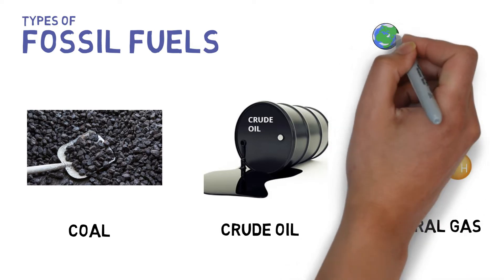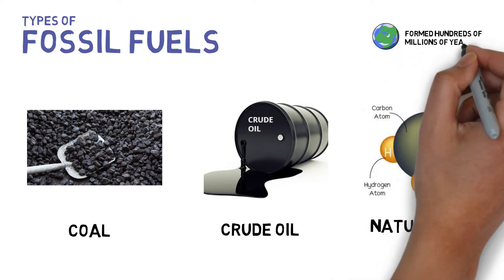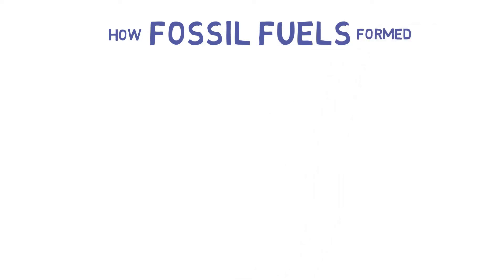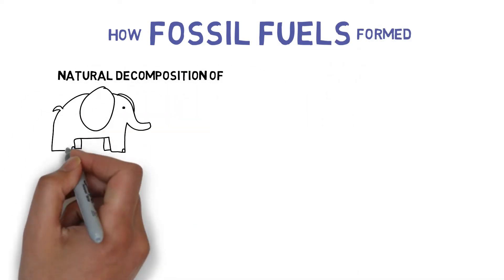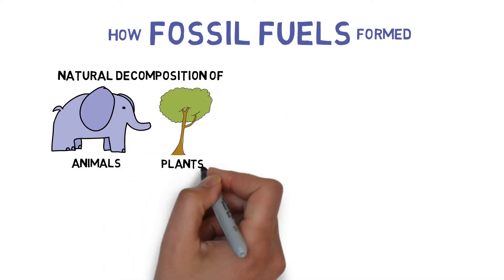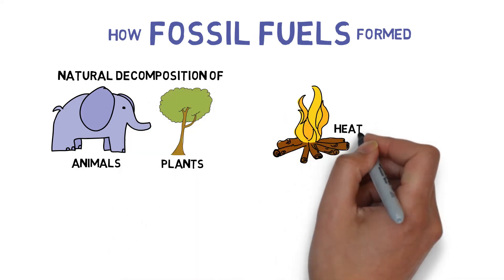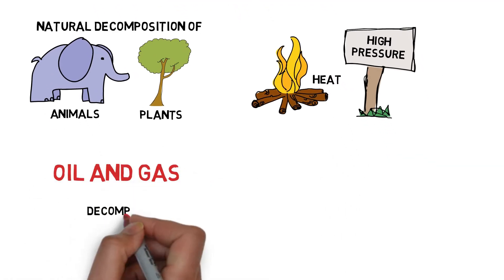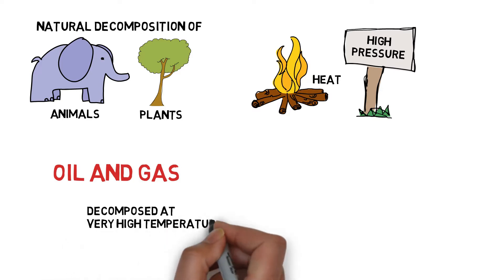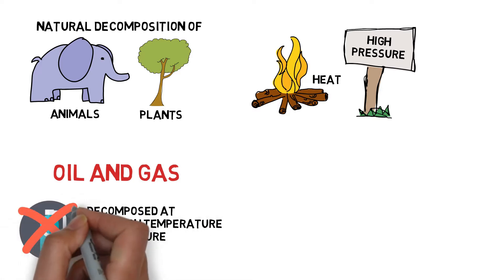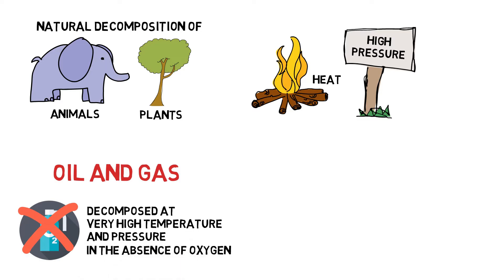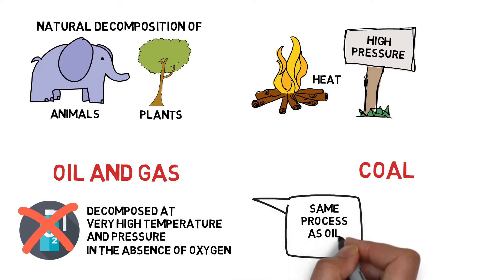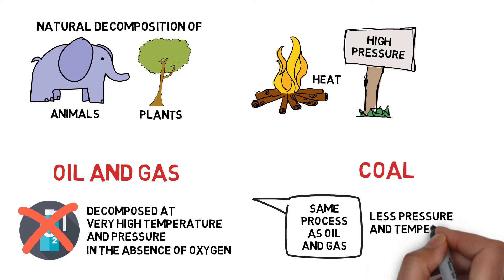Fossil fuels have formed hundreds of millions of years ago. Fossil fuel is formed by the natural decomposition of animals and plants in the presence of heat and high pressure. Oil and gas formed by the burial of plants and animals and decomposed at very high temperature and pressure in the absence of oxygen. Coal is formed by the same process as oil and gas but with a little less pressure and temperature, and hardened to form coal.